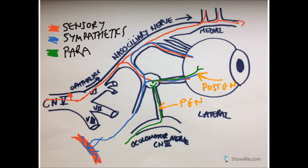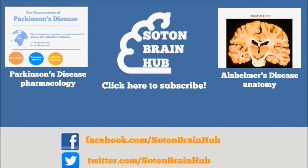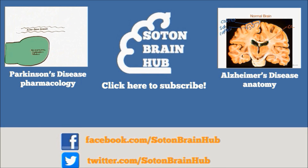That pretty much wraps up the parasympathetics and sympathetics to the eye. Thanks for watching — subscribe to Sultan Brain Hub for more videos to help explain the mysteries of the brain.